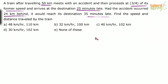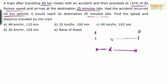Let us assume this is the starting point and this is the destination. Let the total distance between them be D — that's what we need to find. After 50 kilometers, the accident takes place. So the first portion is 50 kilometers, and the remaining portion is D minus 50 kilometers.